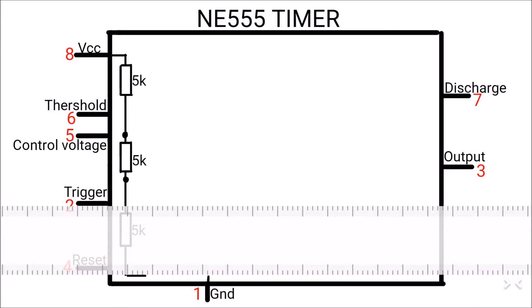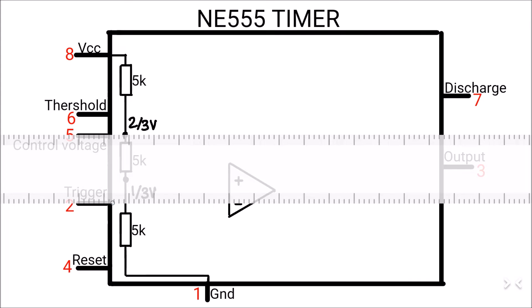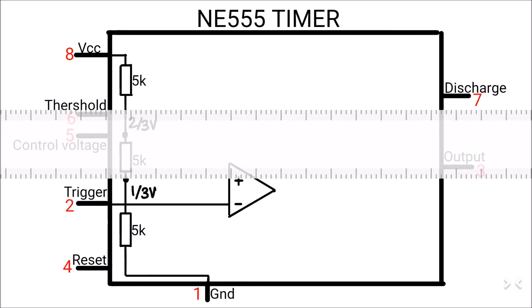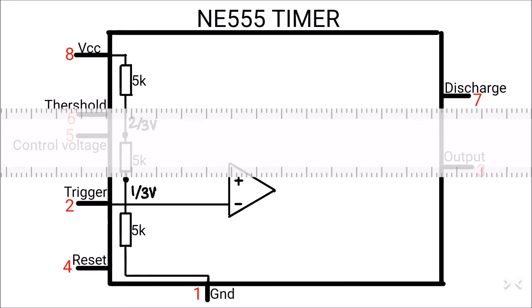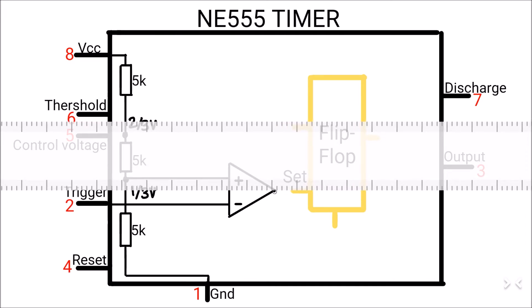The pin number 1 and 8 are connected through three 5kΩ resistors in series with the VCC and the ground, which creates a voltage divider of one-third of the supply voltage and two-thirds of the supply voltage. Pin two is the trigger pin, which connects to the negative input of the first comparator and the positive input is connected to the one-third of the supply voltage and the output of this comparator is connected to the set pin of the flip-flop.